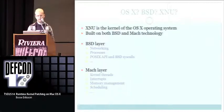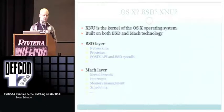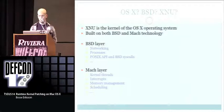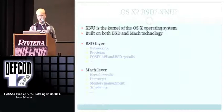Short intro on OSX and the XNU kernel: XNU is the kernel of the OSX operating system, built on both BSD and Mach technology. Mach is the microkernel running at the bottom of the OS. The BSD layer is responsible for networking, processes, and the POSIX API and BSD syscalls — so you can do any POSIX stuff on OSX without touching the Mach layer. The Mach layer handles kernel threads, interrupts, memory management, scheduling, and so forth.